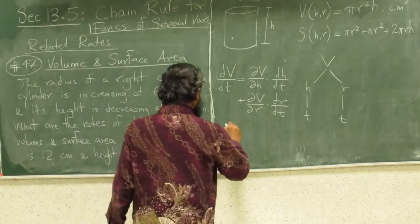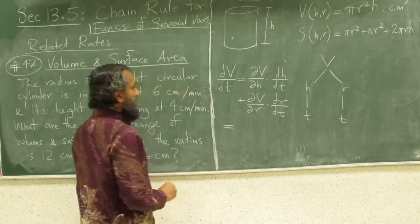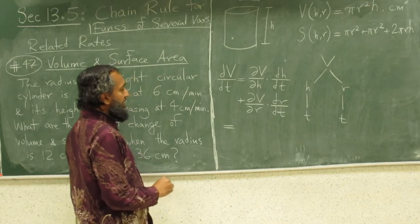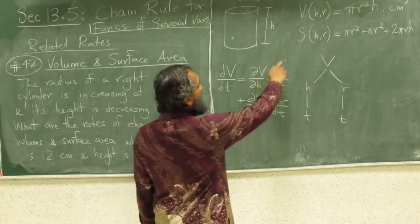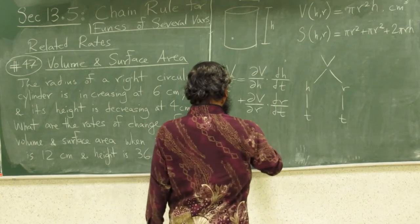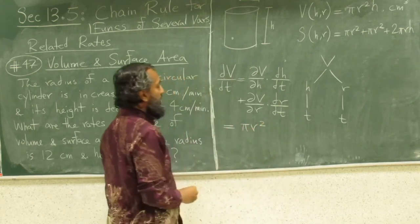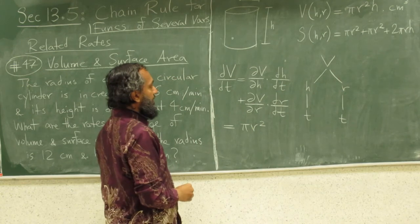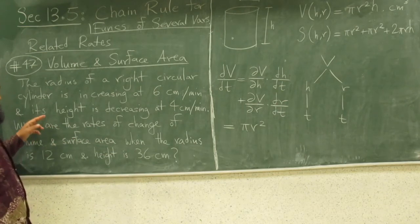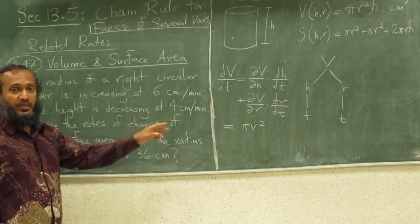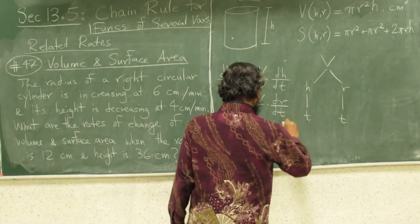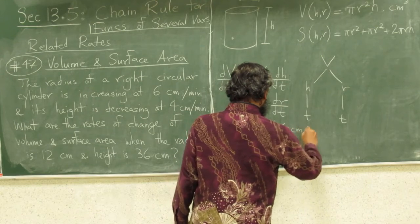What we do is go ahead and start collecting the values. dv/dh is pi r squared times dh/dt. Now dh/dt, it says height is decreasing at 4 centimeters per minute, so dh/dt is minus 4 centimeters per minute.